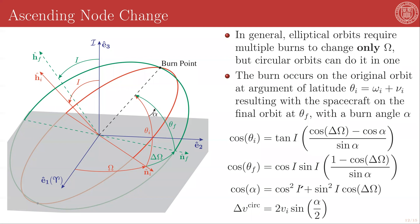Just as with inclination changes, ascending node changes are incredibly costly. You also have two possible burn locations.